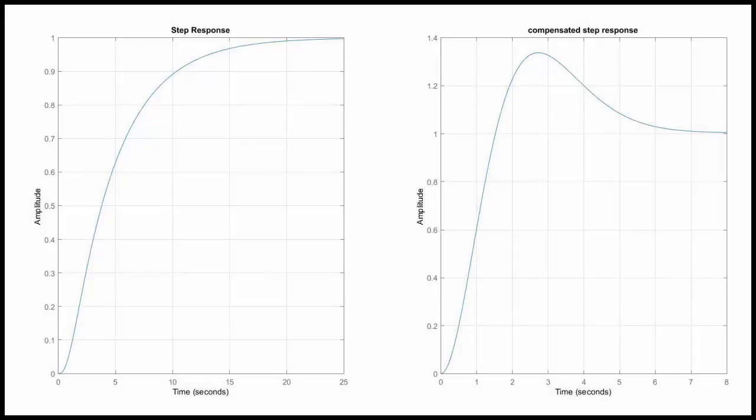And here is the step response for the uncompensated and the compensated system. So what you should notice here is that they actually both have zero steady state error for a step input. However, there is a quicker rise time and settling time for the one with the PID controller. This one has a settling time of approximately 7 seconds compared to 20 seconds for the original uncompensated system, and there is some overshoot due to the quicker response.